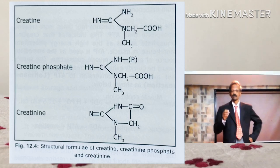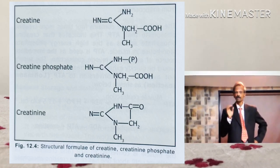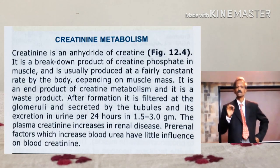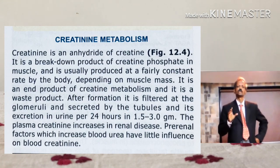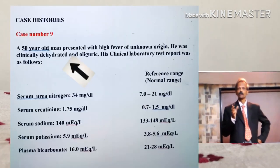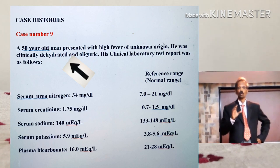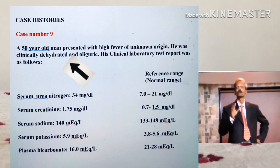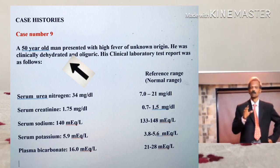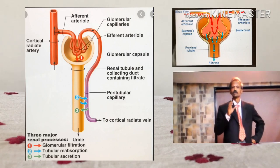The next question is: what is creatinine and why does it increase in pre-renal conditions? Creatinine is the end product of creatine metabolism, and creatine is required for muscular activities. In this case, the patient is also suffering from dehydration and oliguria — that means decreased output of urinary excretion — in which there is a decreased glomerular filtration rate, and hence creatinine is also slightly increased.